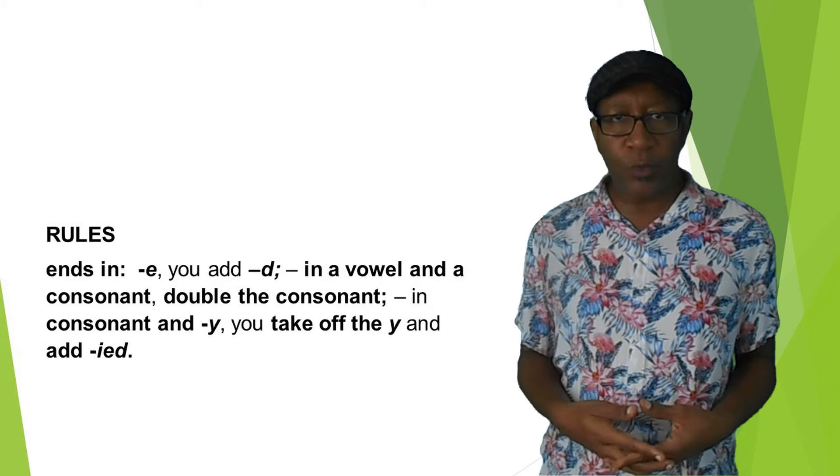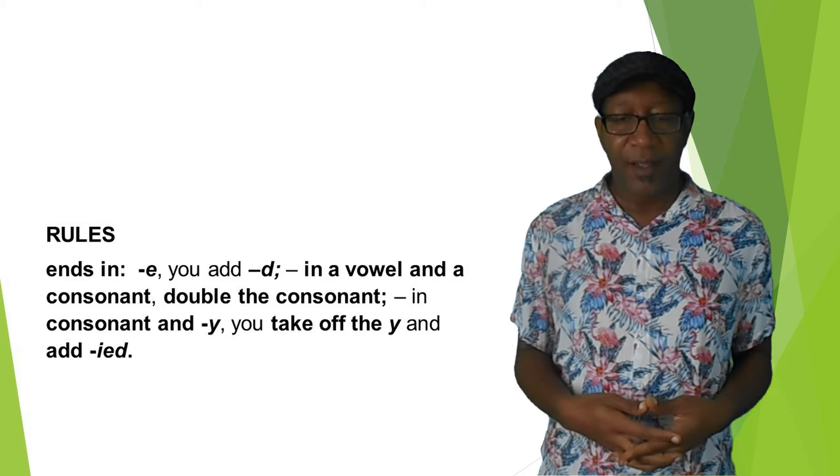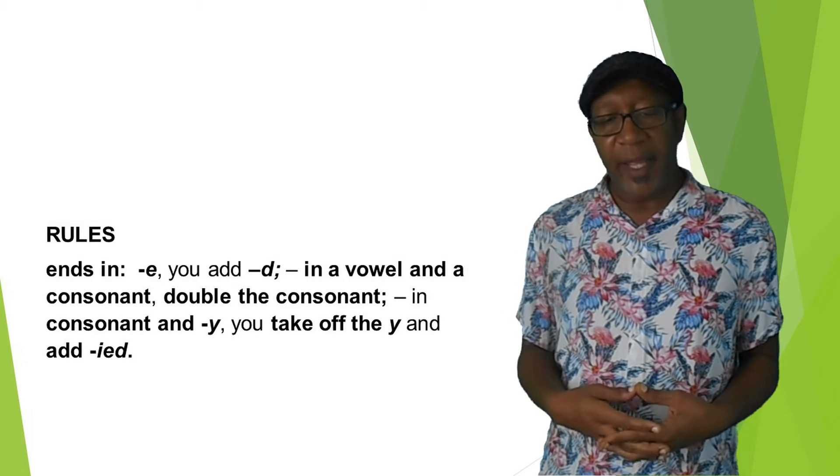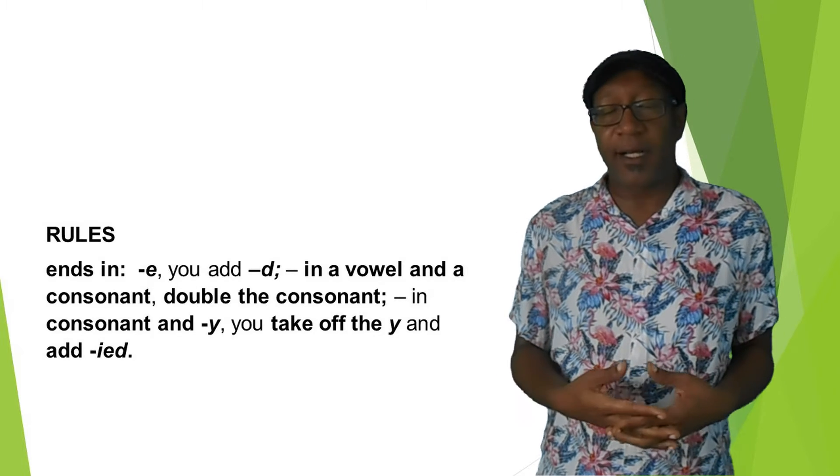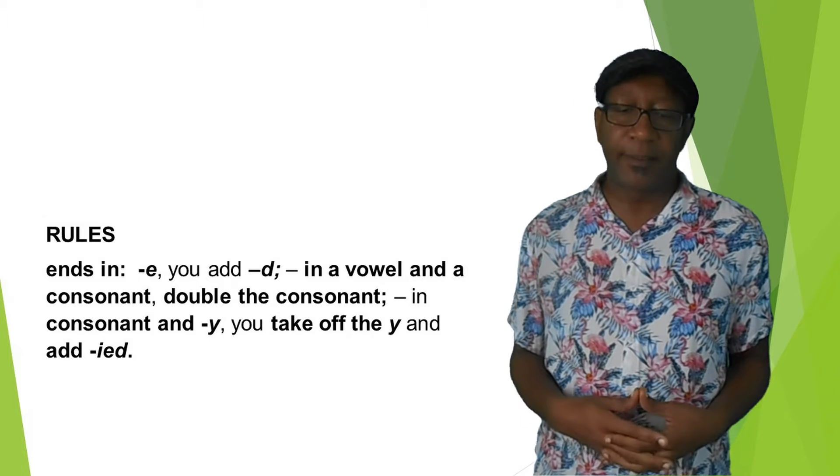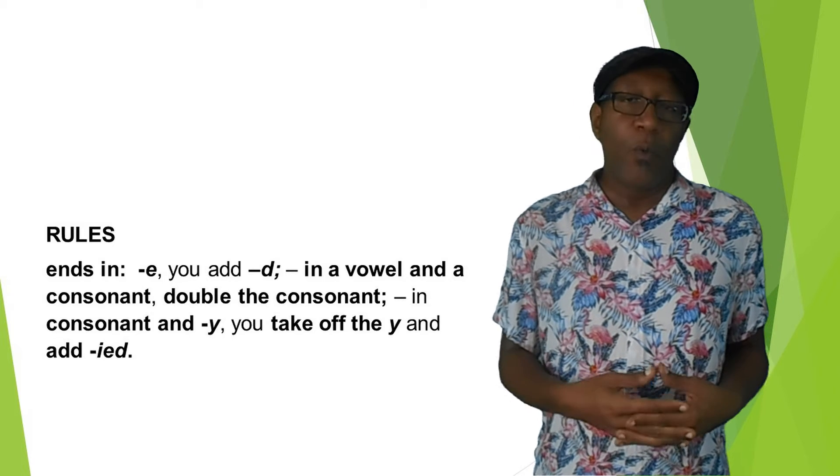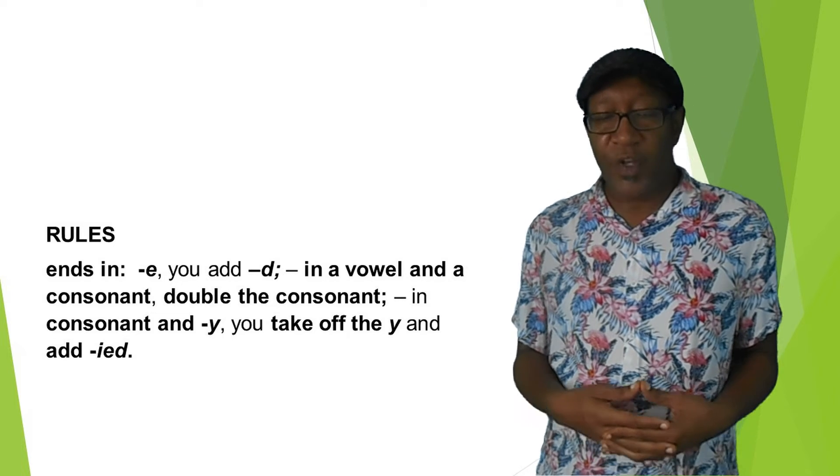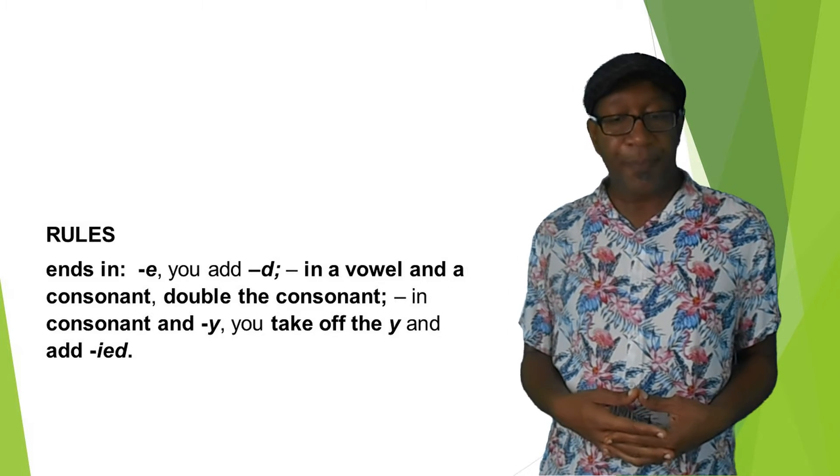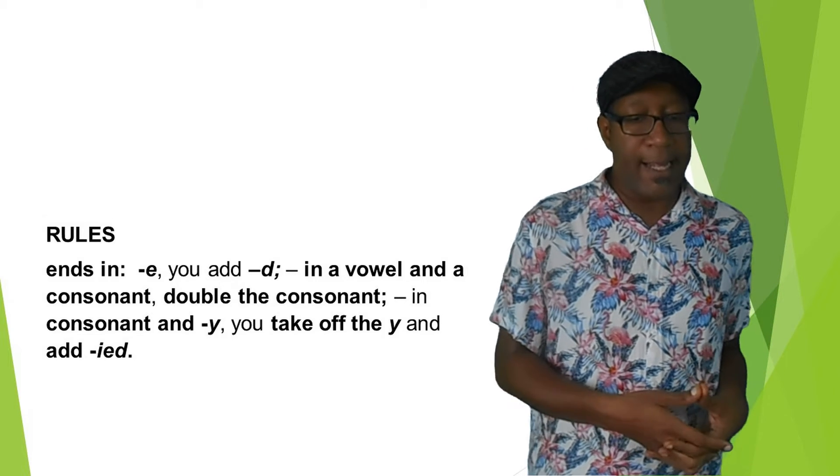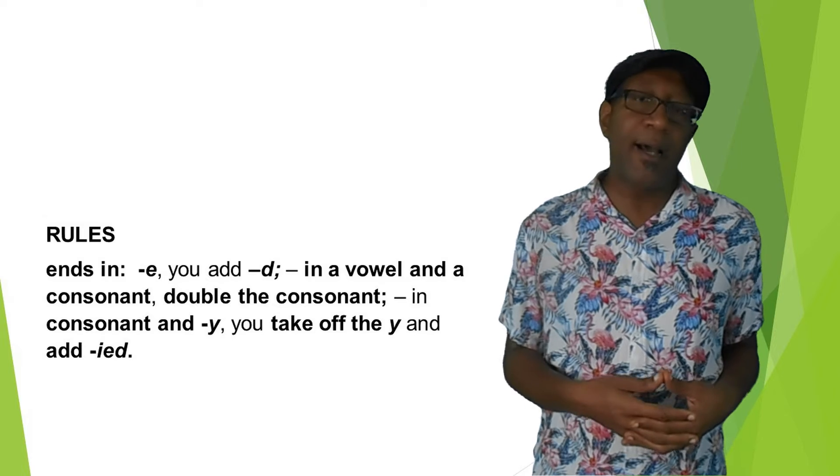So here I bring you some rules to the regular verbs. For example, verbs that end in E, you just need to add D. When the verb ends in a vowel and a consonant, you double the consonant. When the verb ends in consonant and Y, you take off the Y and add -ied.